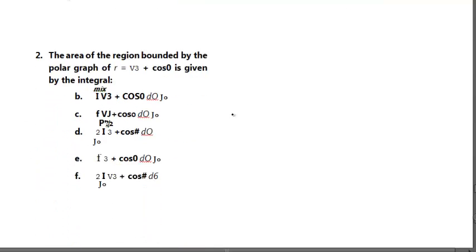All right. Let's look at number two. It's multiple choice. So it tells us the area of the region bounded by the polar graph of, they gave it to us, is given by the integral. My concern with this question is I think they would present you with a graph too. For this particular problem, without a graph, it's going to be very challenging to find your lower and upper limit.